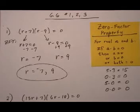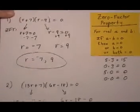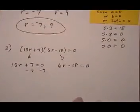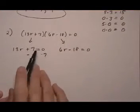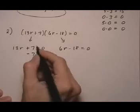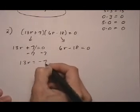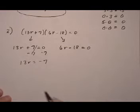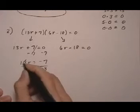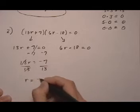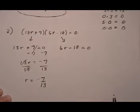And then we go ahead and solve for r. Take away 7 on both sides. This is the exact same process as solving linear equations. Exact same steps. Addition property, take away 7, that gives us 13r equals minus 7. Multiplication property, divide by 13. And we get r equals minus 7 over 13 for the first one.